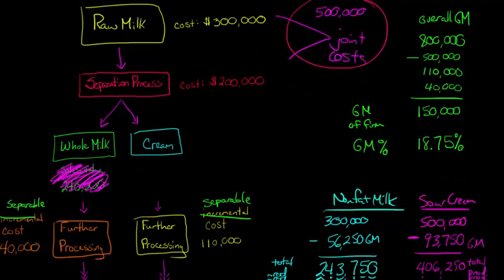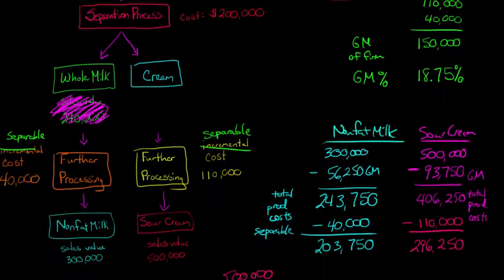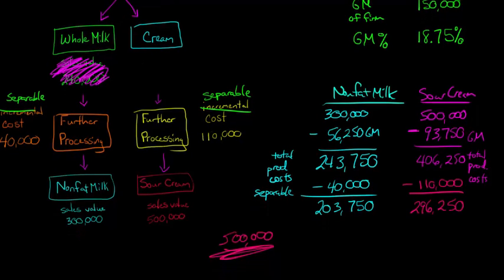A little caveat: it didn't happen in this example, but it's possible that the numbers could result in one of these allocations ending up being negative. That's one thing about this method that's different from something like the relative sales value method for allocating joint costs — you could actually have a negative allocation. We don't have that here, but just a heads up.